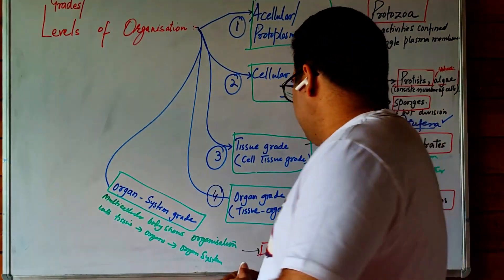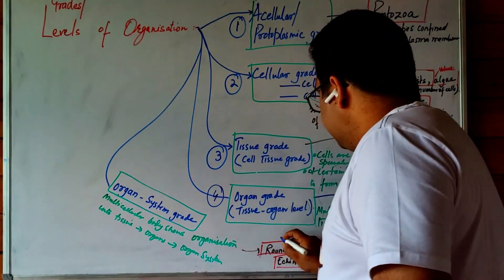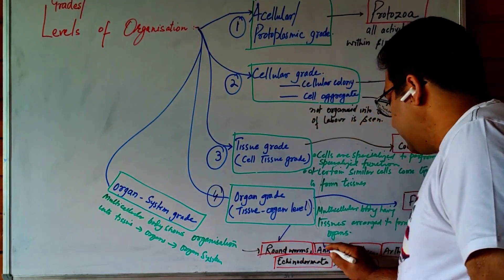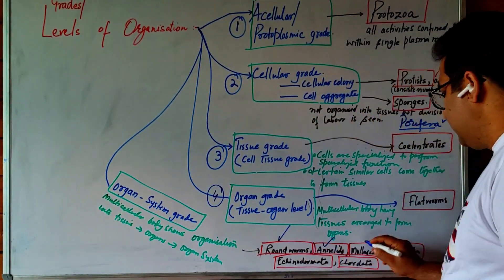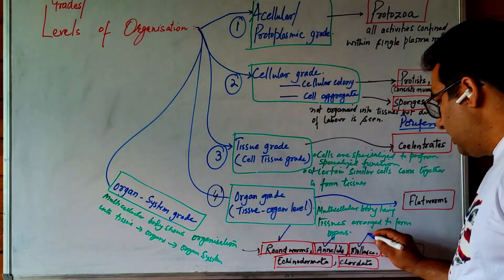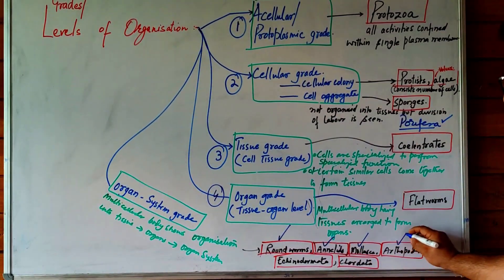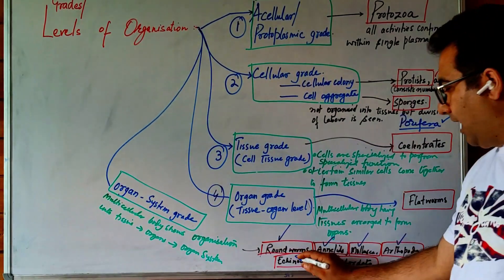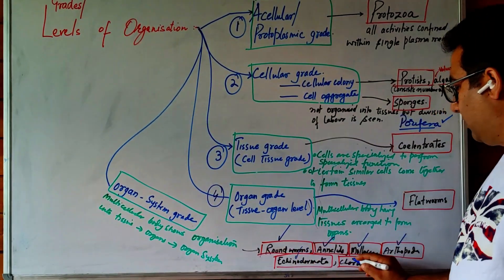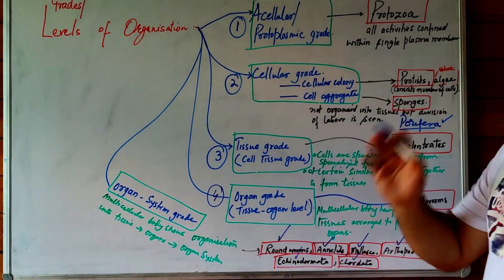The organ system grade of organization is seen in roundworms, annelids, mollusks, arthropods, echinoderms, and chordates.